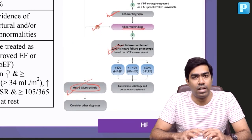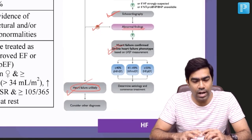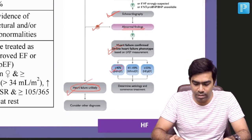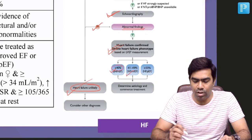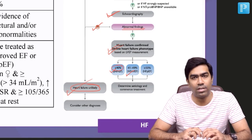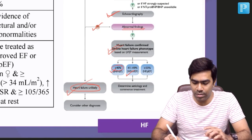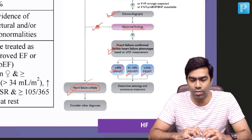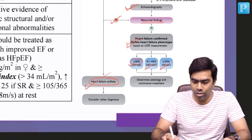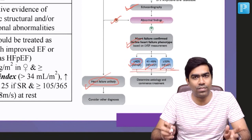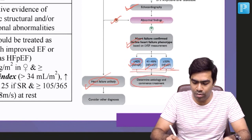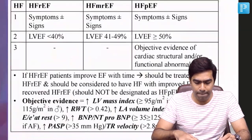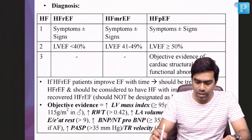Once you confirm heart failure through NT-proBNP and echocardiogram, you can categorize it into reduced ejection fraction — EF less than 40% — or mildly reduced ejection fraction — EF 41 to 49% — or preserved ejection fraction if the EF is greater than or equal to 50%. Once you know the classification of heart failure, you can determine the etiology and commence treatment based on that.